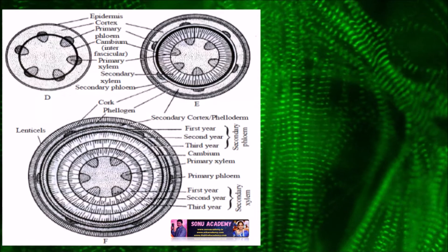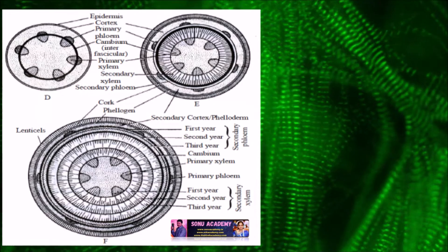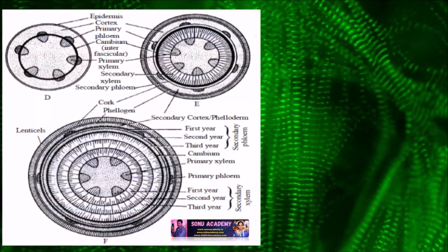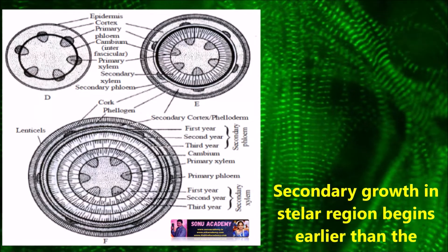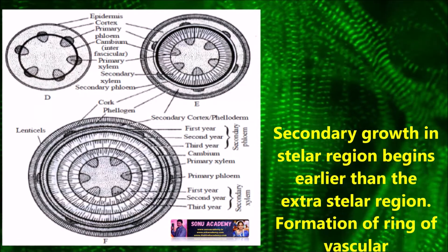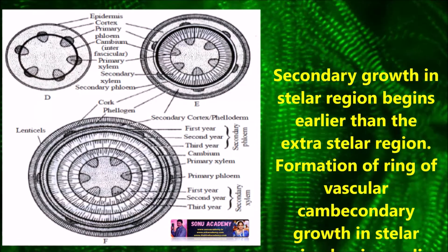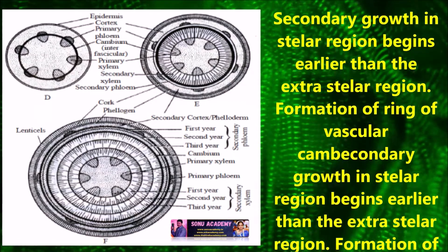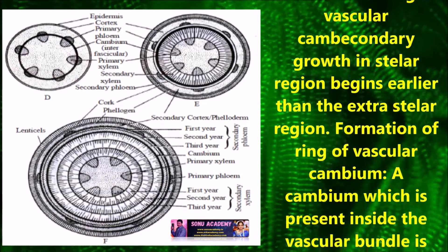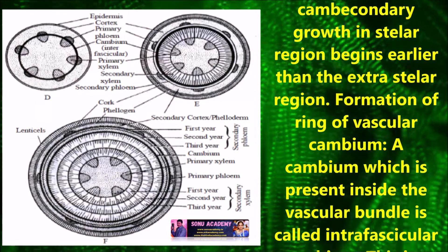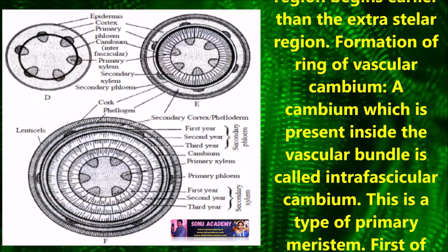Let us discuss the secondary growth in dicot stem. Secondary growth in the stellar region begins earlier than the extracellular region. Let us discuss the formation of the ring of vascular cambium.